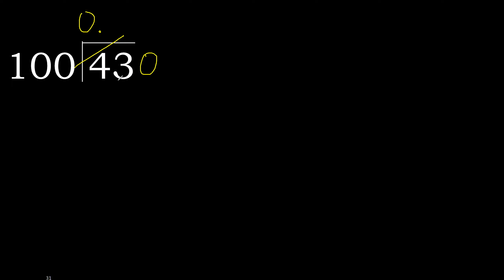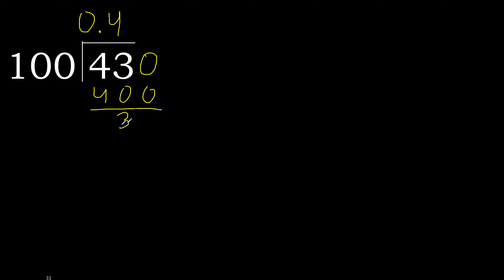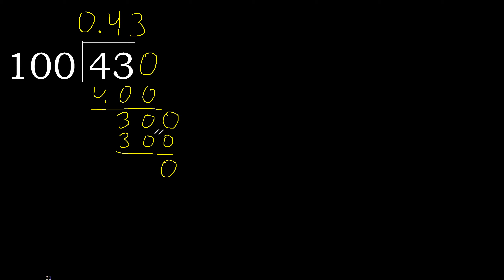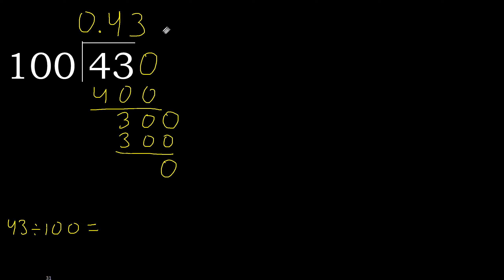Multiply by 5 is 500, which is greater. Multiply by 4 is 400, which is not greater. Okay, subtract. Next, there is no number, therefore complete with 0. 300: 100 multiplied by 3 is 300, not greater. Okay, subtract. 0, therefore finish. 43 divided by 100 equals 0.43.